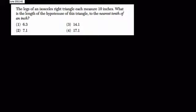Okay, so we're told the legs of an isosceles right triangle each measure 10 inches. So an isosceles right triangle, that means the two legs are equal. And in this case, each of those legs are equal in length to 10 inches.